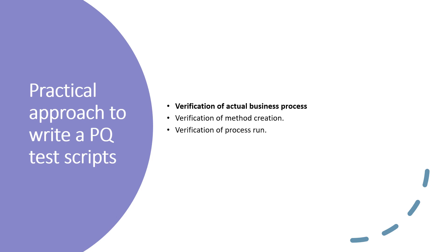Next is verification of process run — that means you are going to perform the test in the system. After creation of the instrument method, you need to create the sequence and processing method to execute the process of analysis. After completion of the run, you need to perform integration of the chromatogram, and there will be a report template by which you can generate the required results.